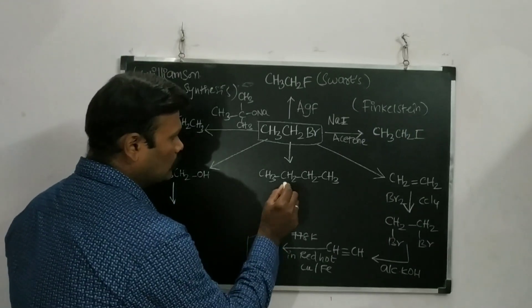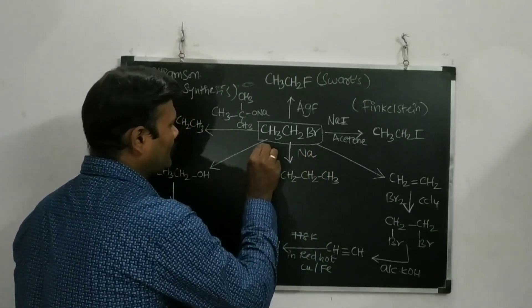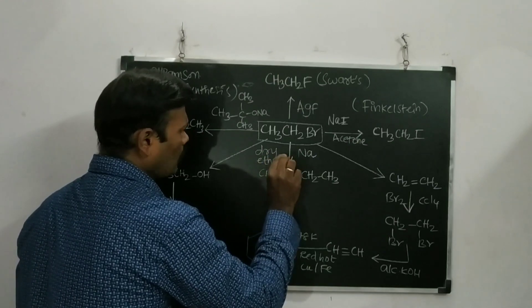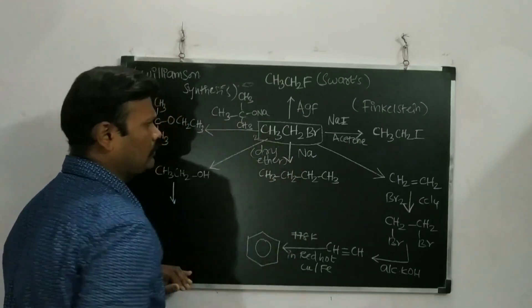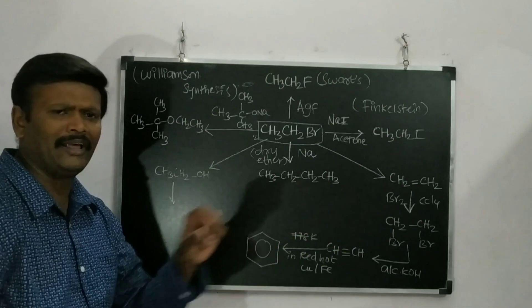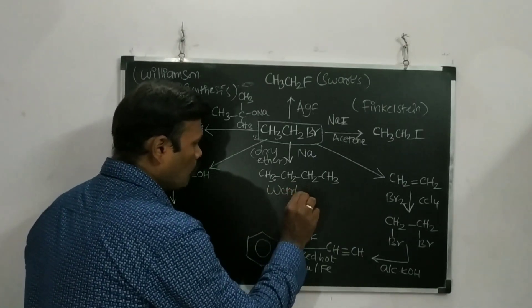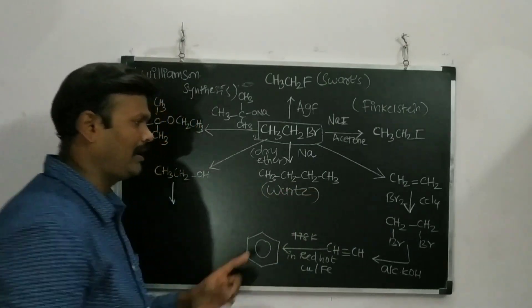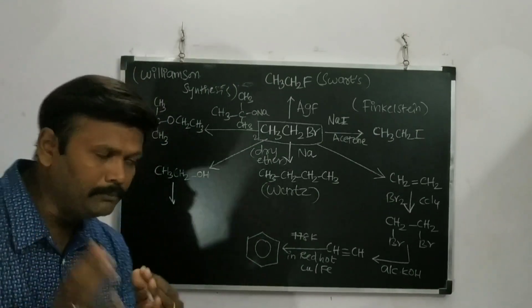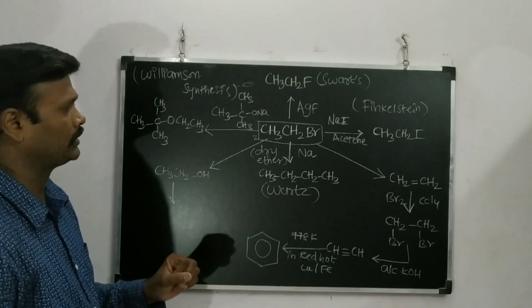If we want to double the number of carbon atoms in ethyl bromide, we use sodium in dry ether. Two moles of ethyl bromide are taken, and we get butane as the product. This reaction is called the Wurtz reaction.